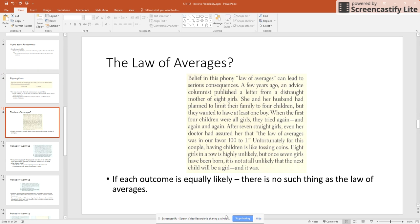So let's look at our law of averages. Belief in this phony law of averages can lead to serious consequences. A few years ago, an advice columnist published a letter from a distraught mother of eight girls. She and her husband had planned to limit their family to four children, but they wanted to have at least one boy. When the first four children were all girls, they tried again and again and again.